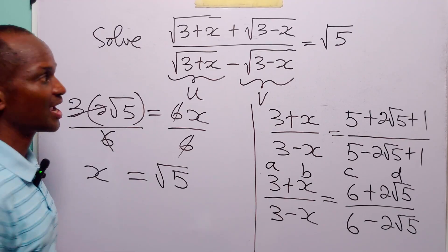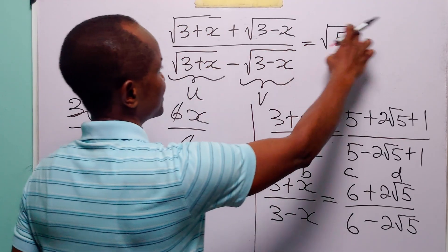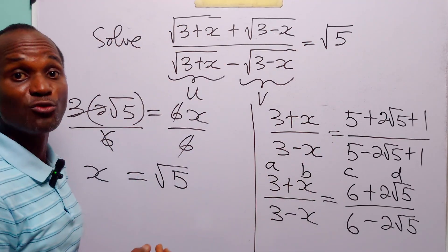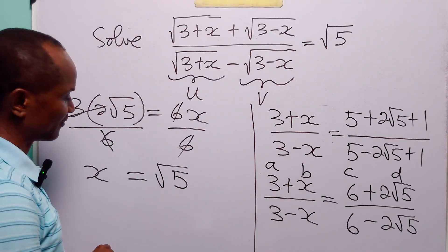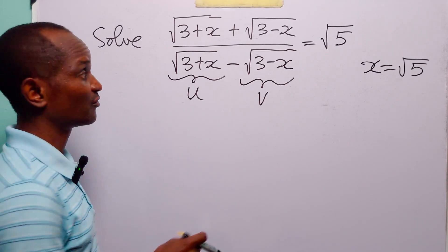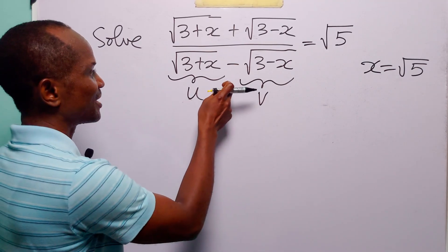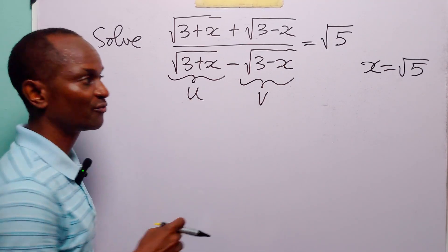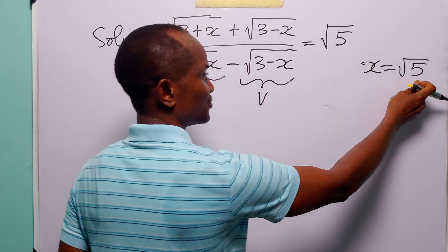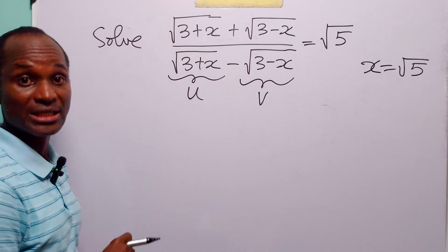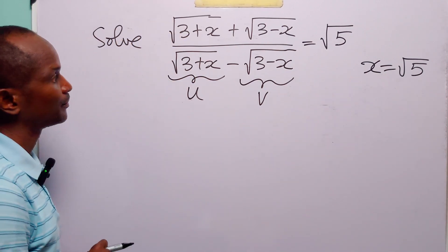So we have that x is equal to root 5. The value of x that satisfies this equation is root 5. Now to check our answer, let us first simplify the left hand side before we substitute this value of x into the equation.